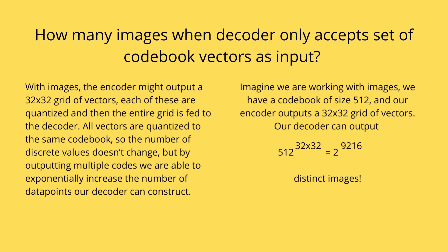All the vectors are quantized to the same codebook, so the number of discrete values doesn't change. But by outputting multiple codes, we are able to exponentially increase the number of data points our decoder can reconstruct. For example, with a codebook of size 512 dimensions and an encoder that outputs a 32 times 32 grid of vectors, our decoder can output 512 to the power of 32 times 32 distinct images — an amazing number, even with a limited discrete set of codebook vectors.